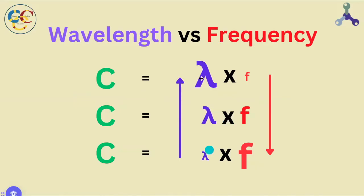when one term increases, the other term decreases, and vice versa. And this inverse relationship between lambda and f comes about because our light speed term is a constant. It's always the same thing.